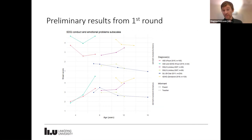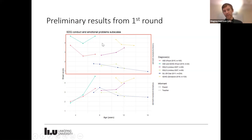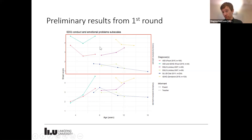A few of the studies reported results for the Strengths and Difficulties Questionnaire conduct and emotional problems subscales. In this chart, every dot is a time point in a study and every line is a study. The lines higher up all include children with ADHD, for example. When it comes to conduct problems, one could probably say that in at least four out of six of these studies, the last data point is at a lower level than the first — so maybe that's something to look at in further depth.